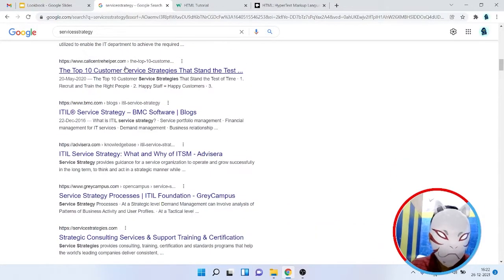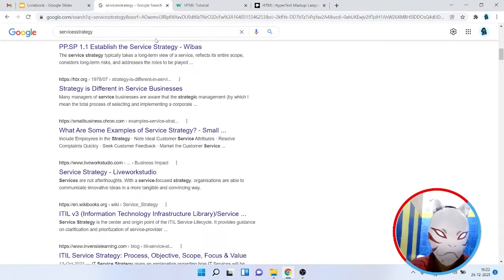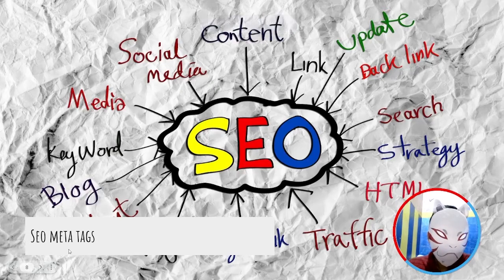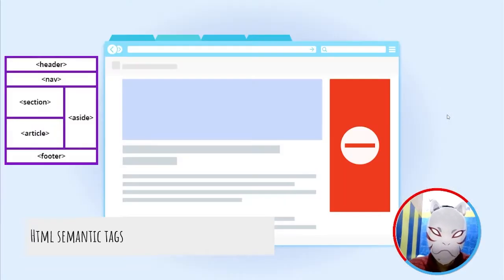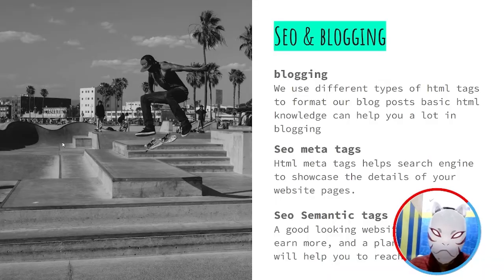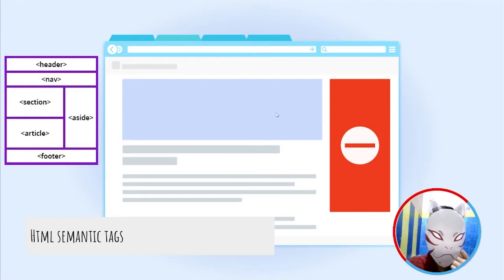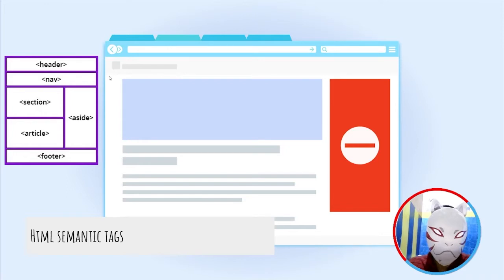Now let's see what SEO semantic tags are. A good-looking website helps you earn more, and a planned layout will help you reach more users. Semantic tags help describe more about this layout. For example, when we use a navigation bar, we provide it inside a nav tag.